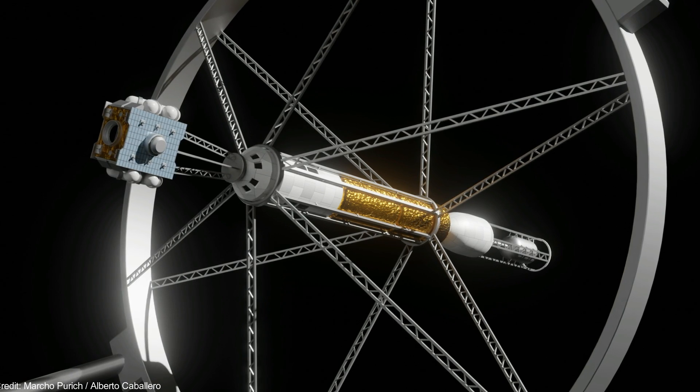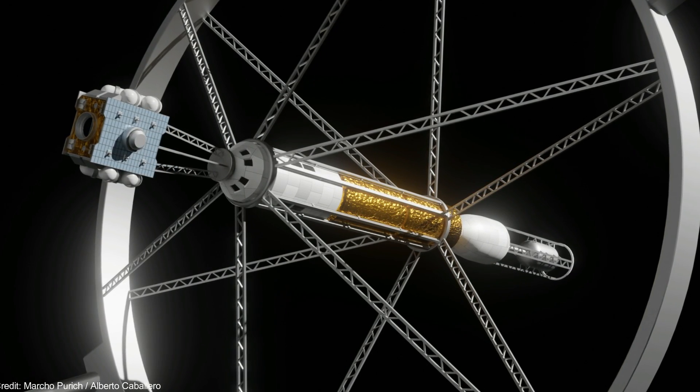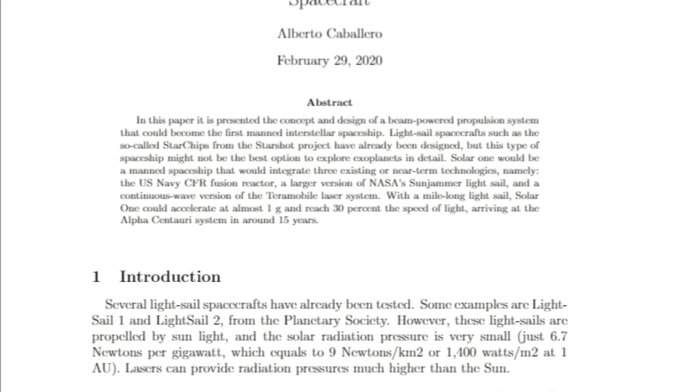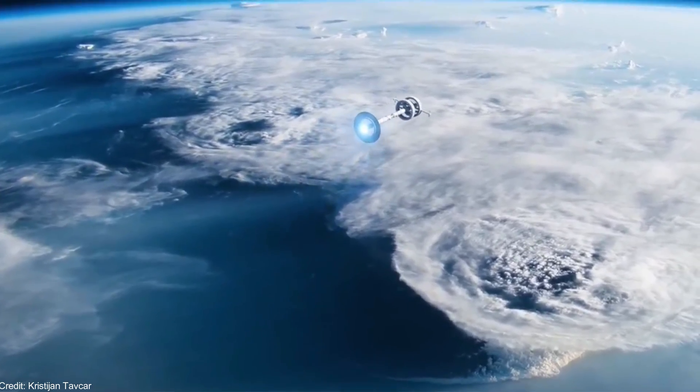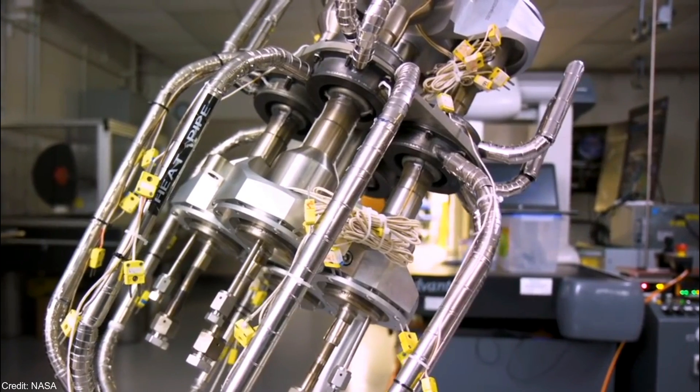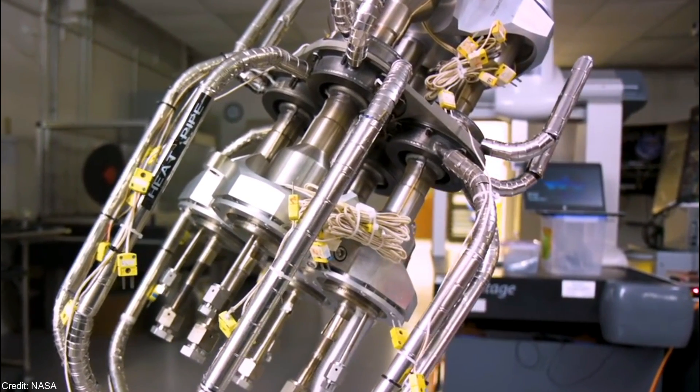Today I would like to introduce Solar-1, my proposal for a new type of Interstellar Spacecraft. The link to my paper is in the description below. My proposal combines three methods of interstellar travel: nuclear fusion or antimatter energy, laser propulsion, and photon propulsion. A nuclear fusion reactor would power a laser system, and this laser would propel a light sail.